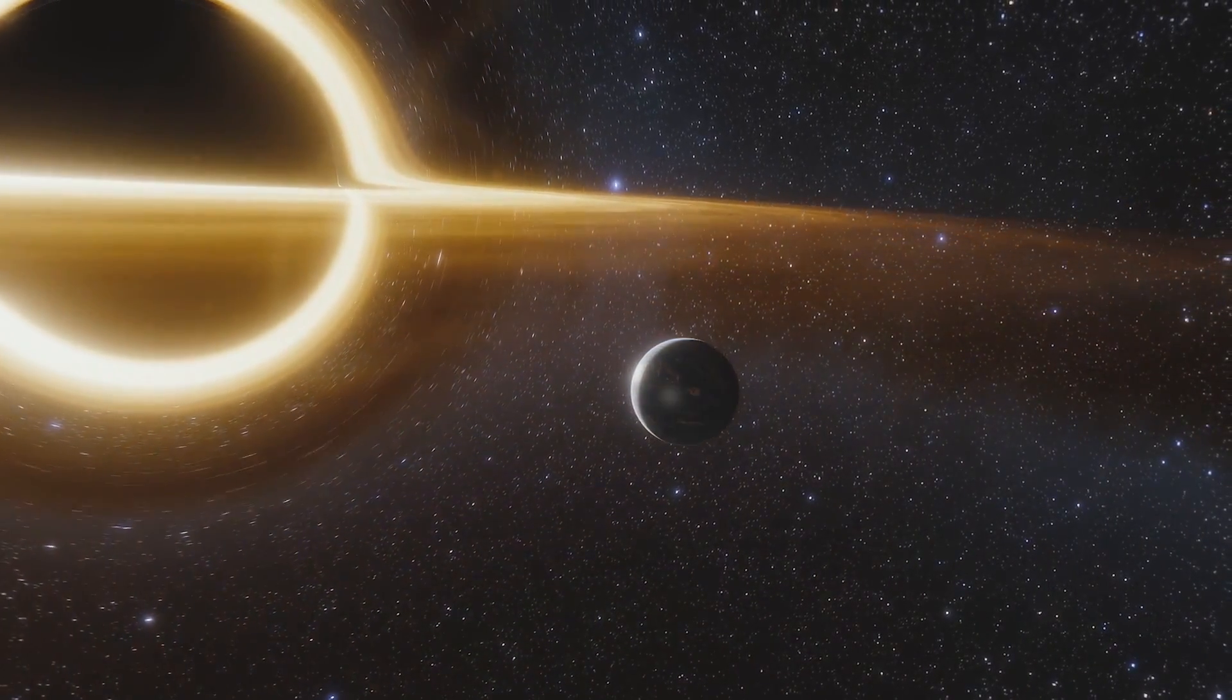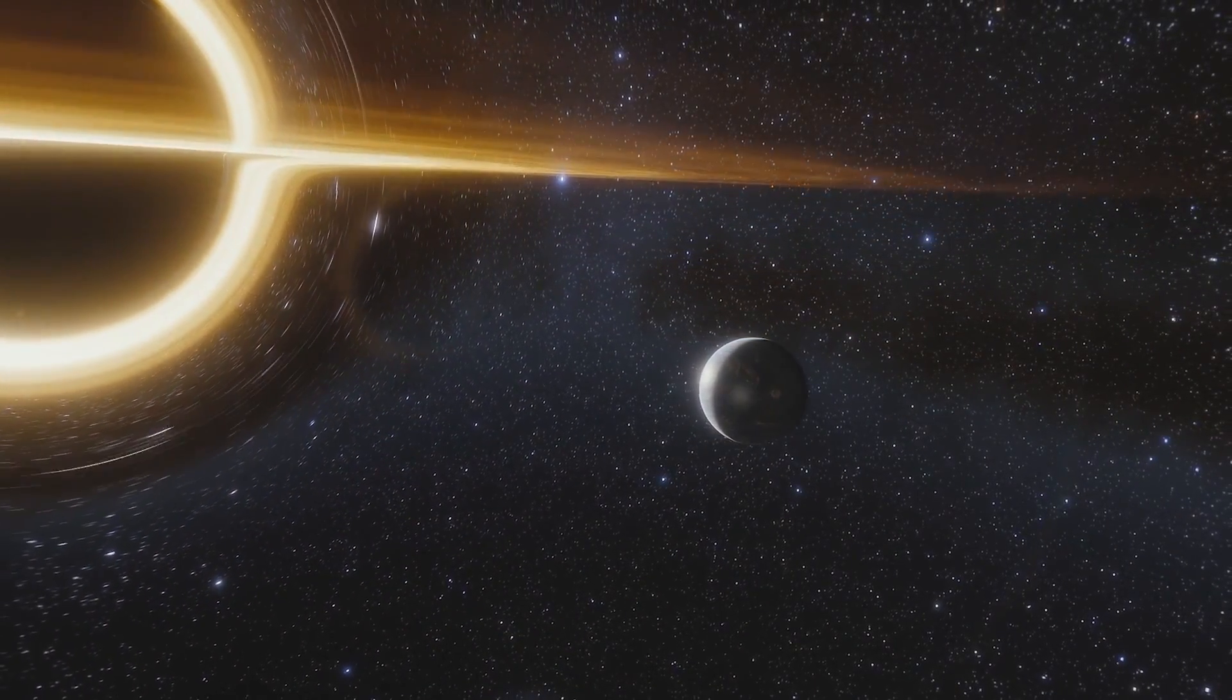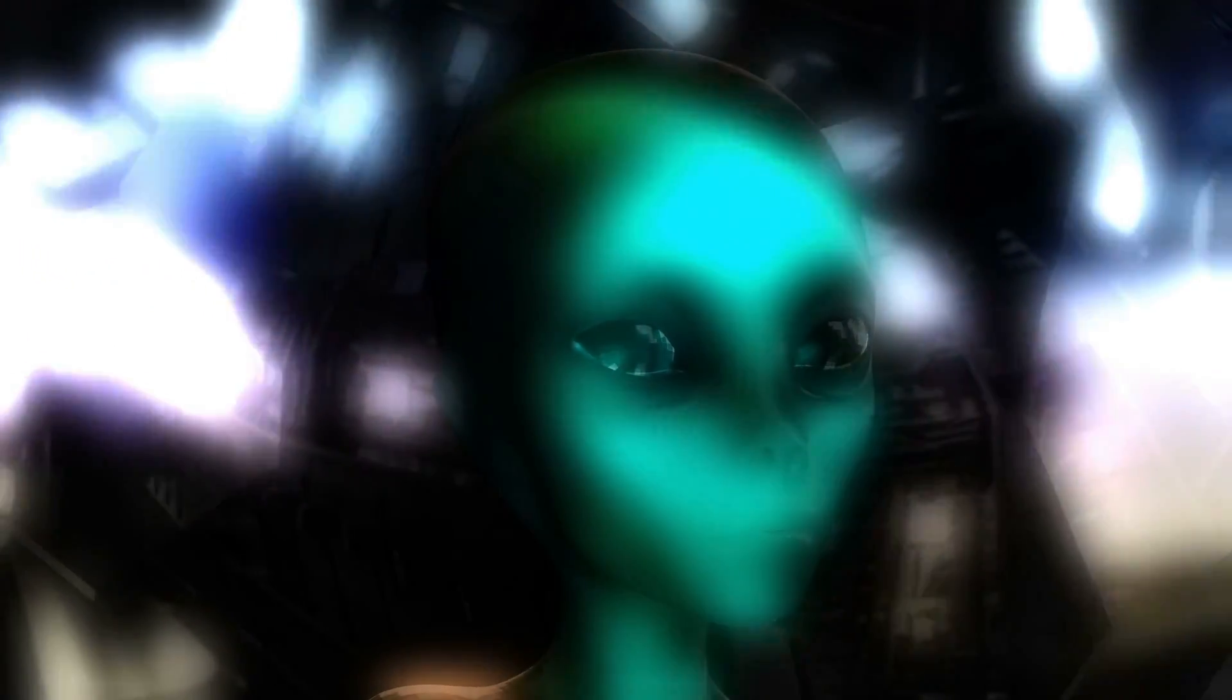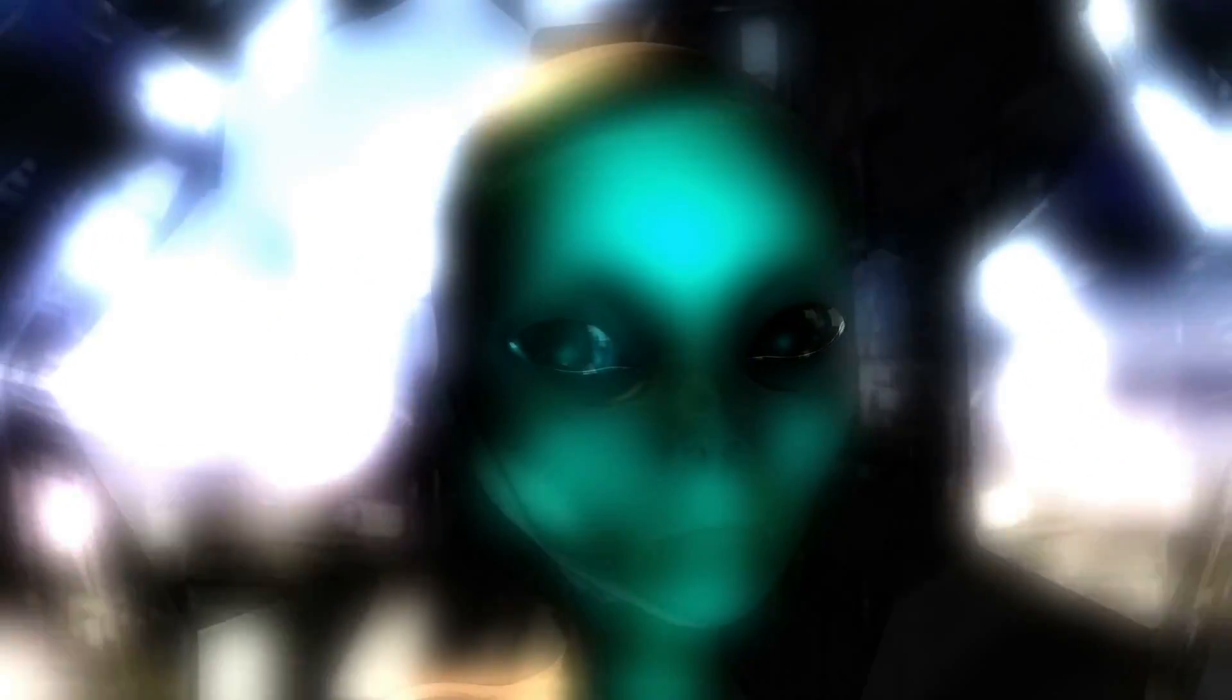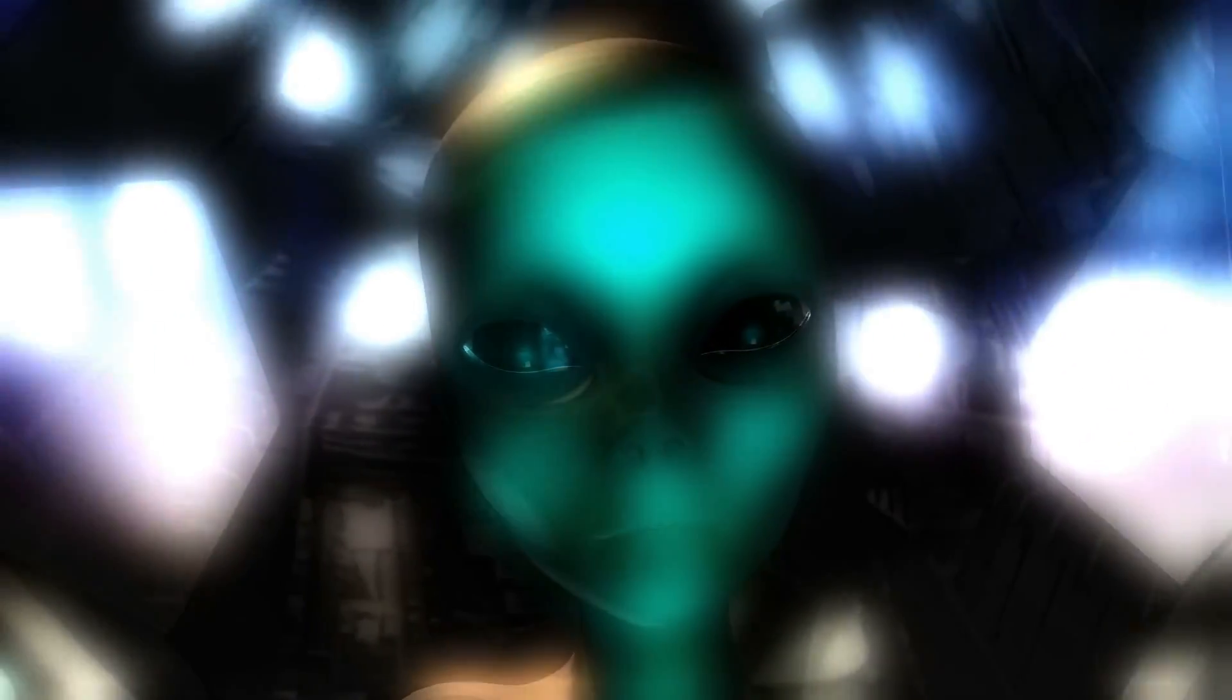For such a planet, the accretion disk would be as bright in the sky as Earth's sun. Because such quasars and their associated massive black holes are the oldest objects in the universe, even a few life-supporting planets there would allow for the possibility of technologically advanced civilizations to exist not long after the very beginning of the universe.